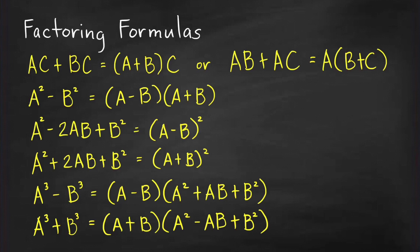When you study factoring polynomials, you will be given these factoring formulas. You have here factoring the GCF — in this case your GCF is C, and in this expression your GCF is A. You have here difference of two squares, which you write as a product of two binomials: sum and difference. Then factoring perfect square trinomials, because these are trinomials that you can write as a perfect square. And then difference of two cubes, and then sum of two cubes.